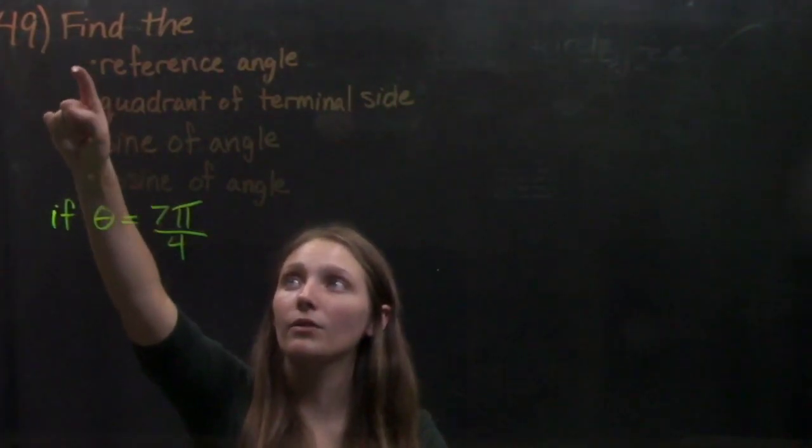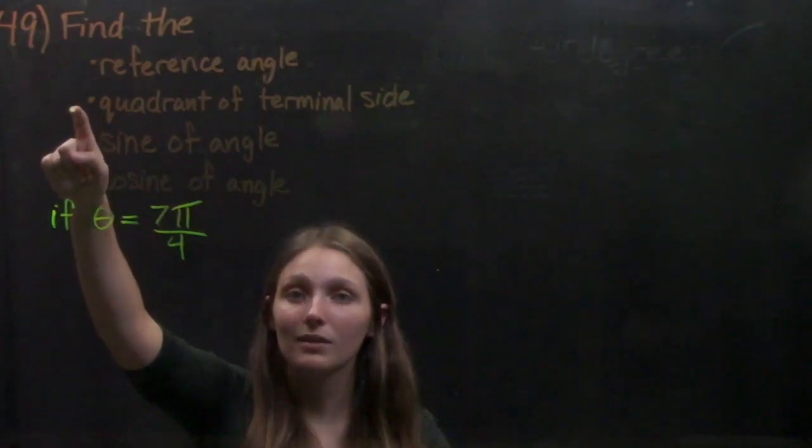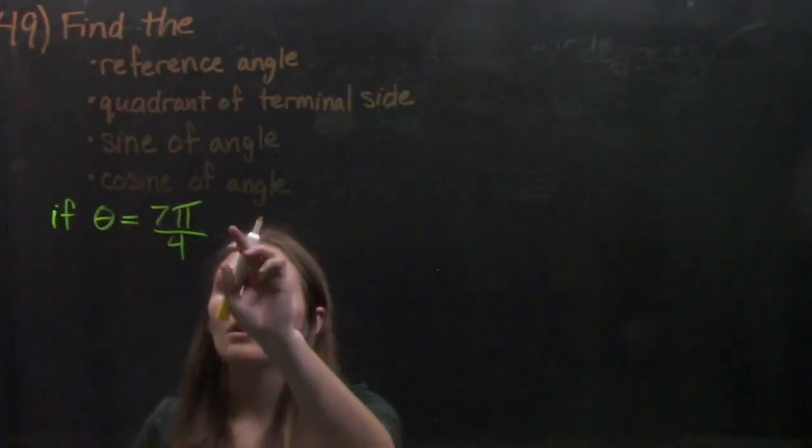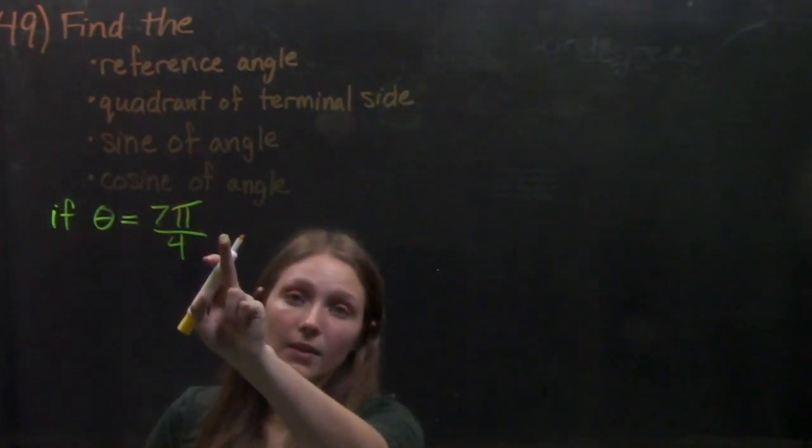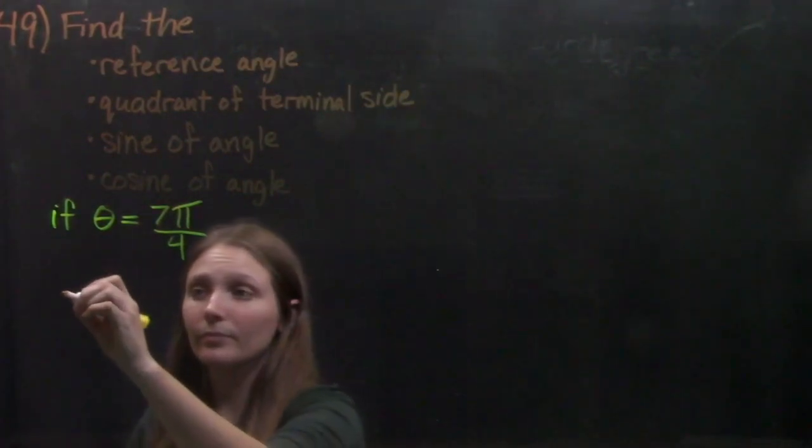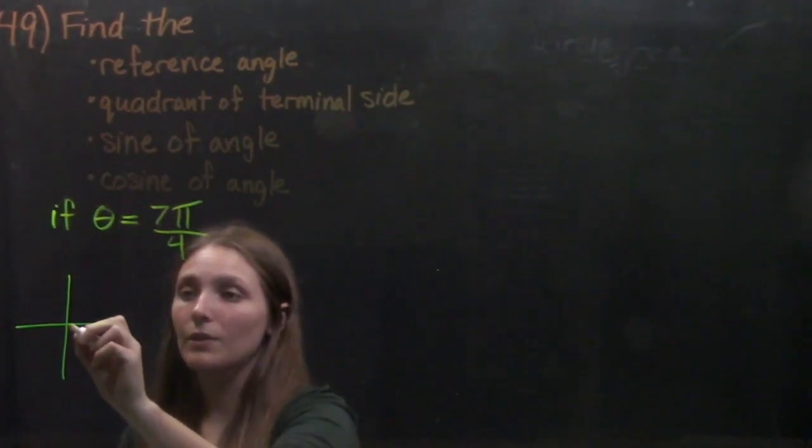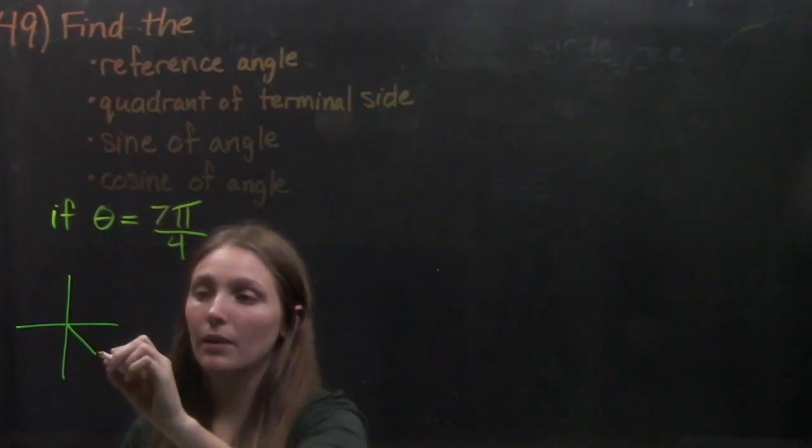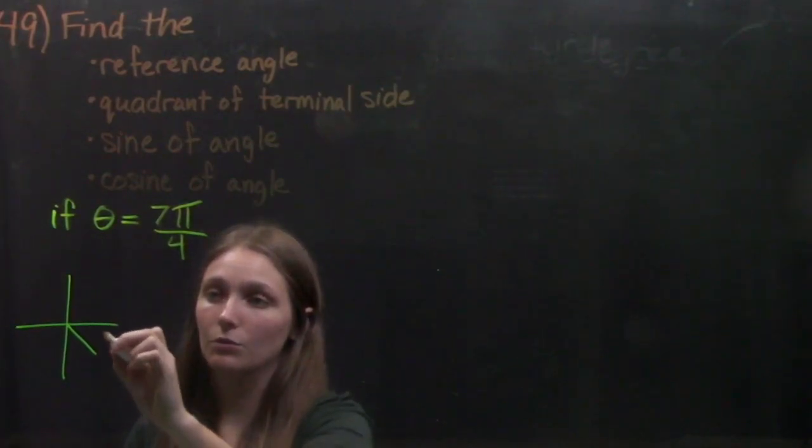So before we can find the reference angle, we need to know what quadrant the angle's in. Since it's 7 pi over 4 and we know the unit circle, we know that the terminal side of 7 pi over 4 is going to be in this quadrant right here.